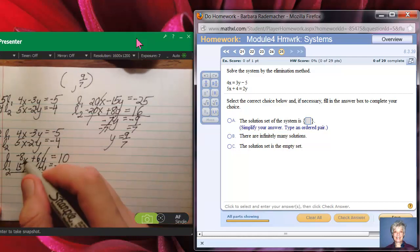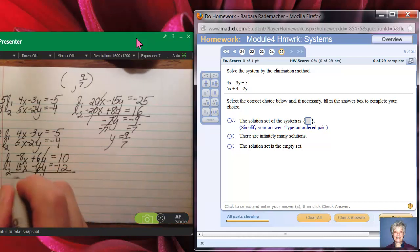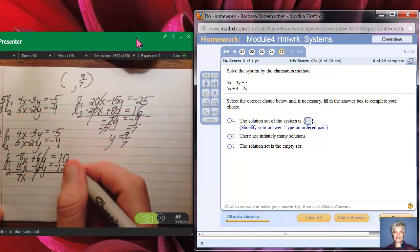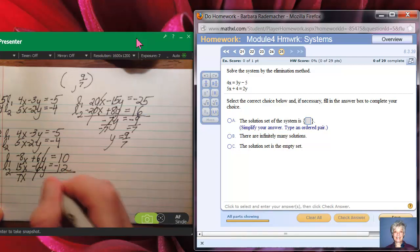Now negative 8x plus 15x is 7x, and 10 plus negative 12 is negative 2, and so if I divide both sides by 7, I will have x equals negative 2/7.